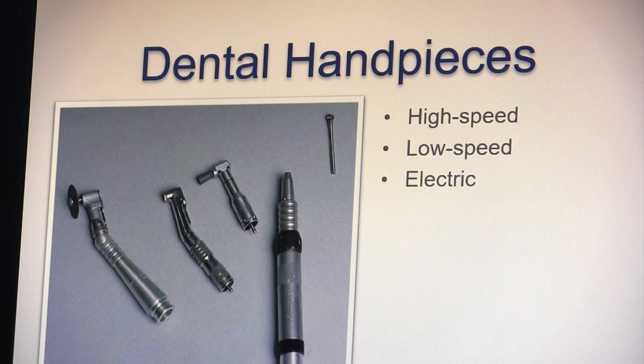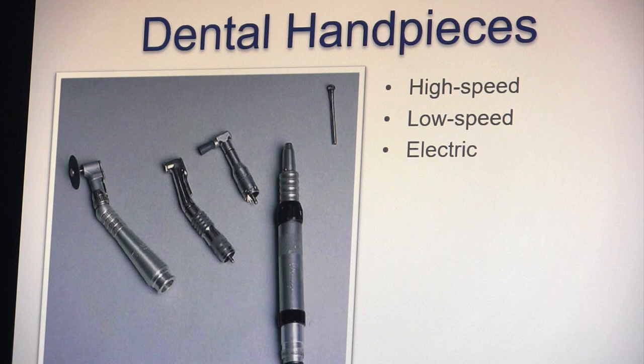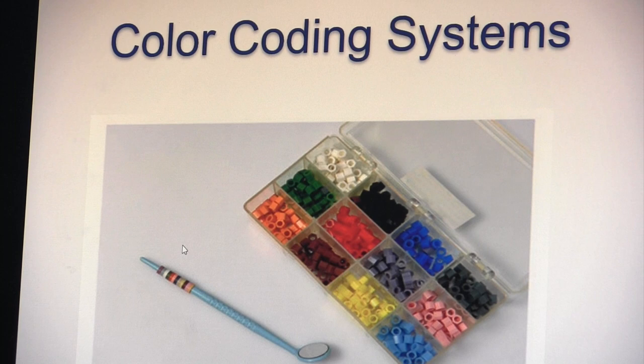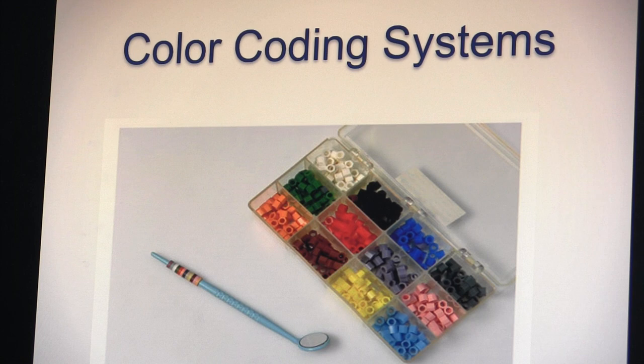There is a metal prophy angle for the low-speed handpiece. Color coding systems are used in some offices — at our school, instruments will be marked with green and white bands or tape. We use color coding for restorative kits and cement kits; for example, a red, white, and blue kit means any strayed instrument with those colors goes back to that kit. The office you work in may have a different color coding system or none at all.